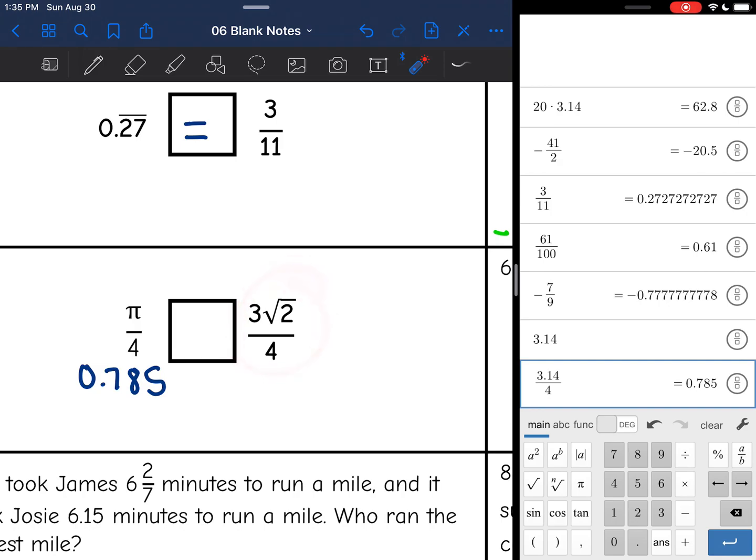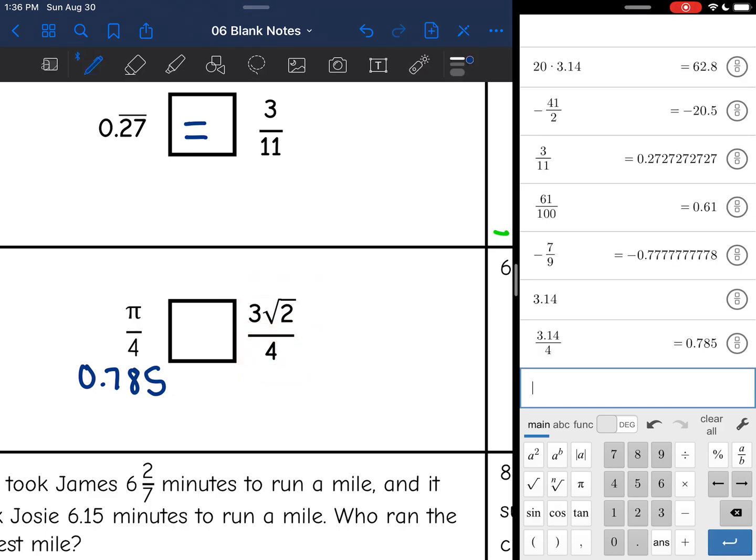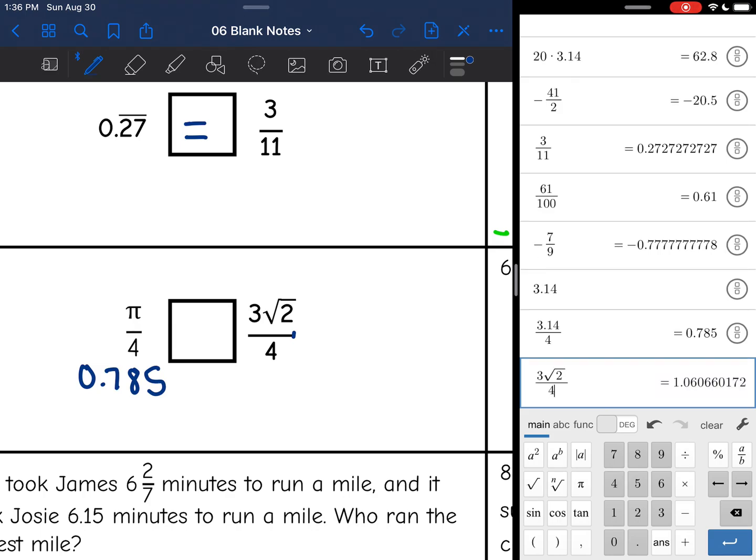Then this right here, we need to be super careful about how we type it into the calculator. 3 times the square root of 2 is in the numerator, and 4 is the only thing in the denominator. So make sure it looks like that when you type it in. I'm going to do 3 square root of 2 and then arrow out because the 4 is not under the square root sign. And then I'm going to divide by 4. So make sure you're hitting the arrow out key. And I get 1.06.